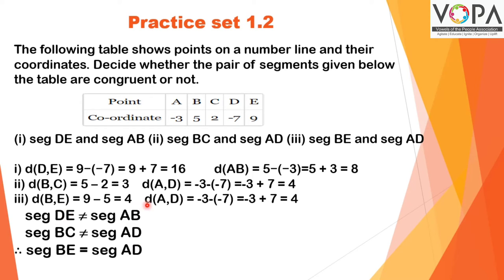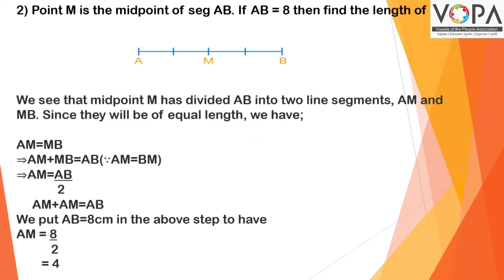(iii) Distance of BE and distance of AD. BE is 9 - 5 = 4 and AD also equals 4. Hence segment BE is equal to segment AD. Second question: Point M is a midpoint of segment AB. If AB = 8, then find the length of AM.